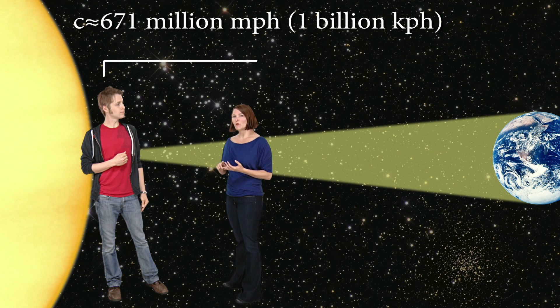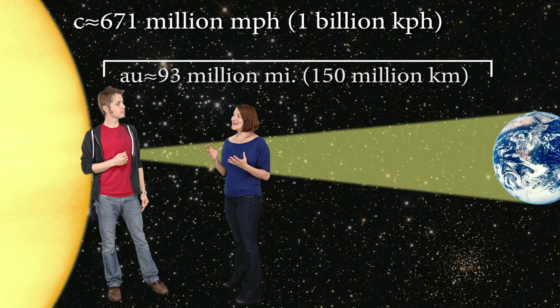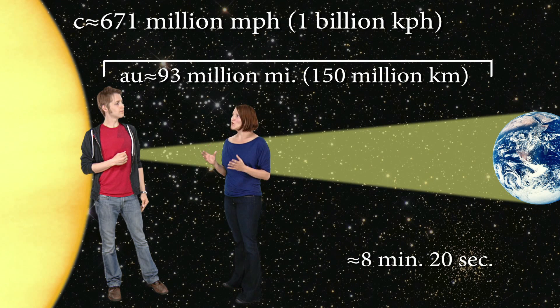Yeah, and the really cool thing about this is that we actually know how long it takes for a little photon to actually reach the earth. And the reason we know that is because we know the speed of light and we know the distance from earth to sun. That gives us an estimate of 8 minutes and 20 seconds.